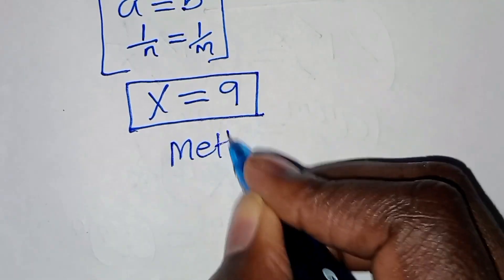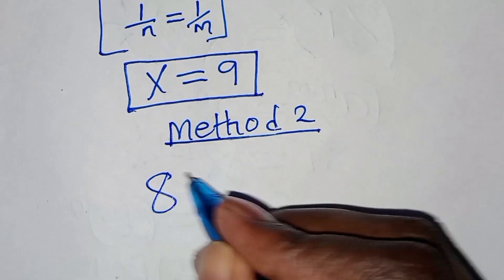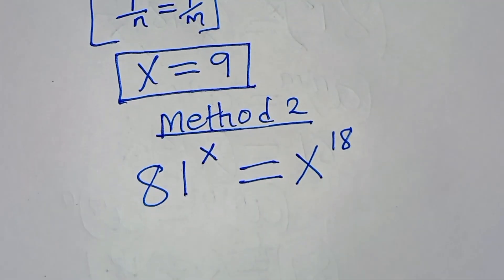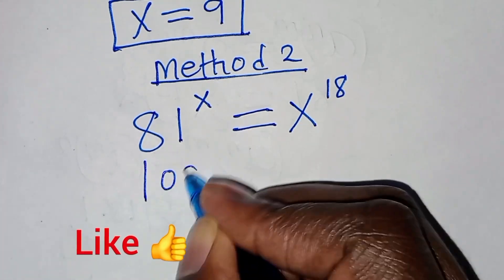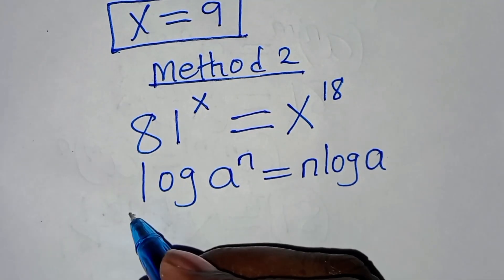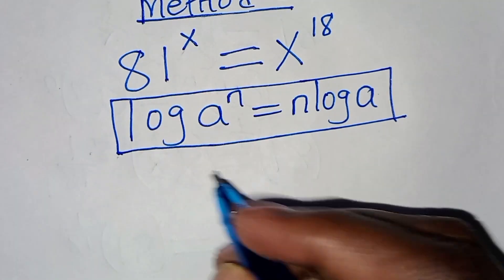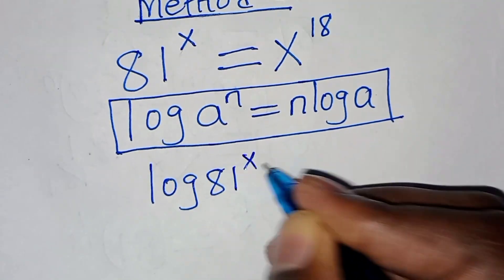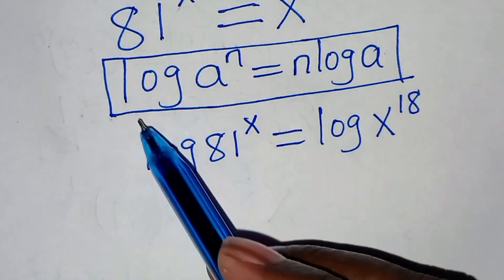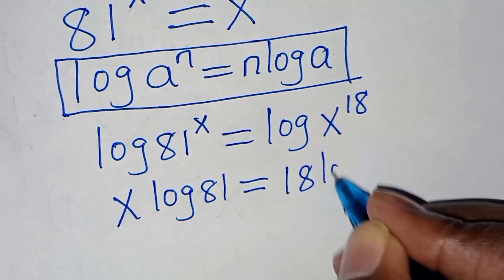Let's apply Method 2. We have 81 raised to the power x, this is equal to x to the power 18. Now 81 to the power x is in the form of log a to the power n, which we can express as n log a. Applying this power property of logarithms, we can express this as: log 81 to the power x equals log x to the power 18, which gives us x log 81 equals 18 log x.